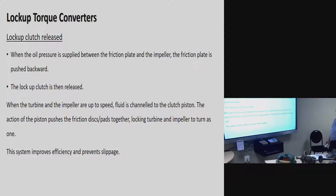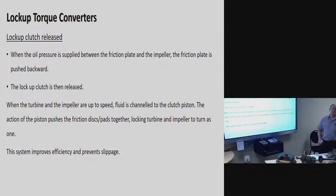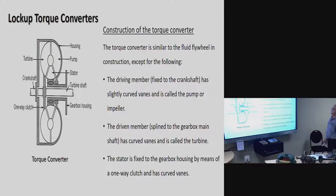Lock-up torque converter — lock-up clutch release. When oil pressure is supplied between the friction plate and impeller, the friction plate is pushed backwards and the lock-up clutch is then released. When the turbine and impeller are up to speed, fluid is channelled to the clutch piston; this action pushes the friction discs and pads together, locking the turbine and impeller to turn as one. The system improves efficiency and prevents slippage.